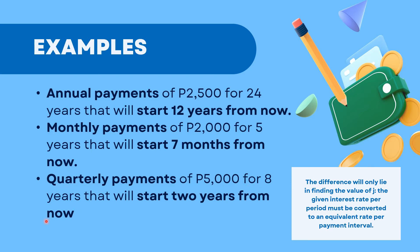Next: quarterly payments of 5,000 for 8 years that will start 2 years from now. Since it's quarterly, that means 4 times a year. For 8 years, the number of actual payments is 4 times 8 which is a total of 32 actual payments. But as a Deferred Annuity, it won't start until 2 years from now. So you'll start on your second year, meaning the first 4 quarterly payments — the entire first year — is the deferred period.